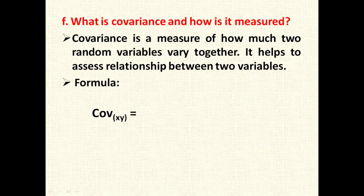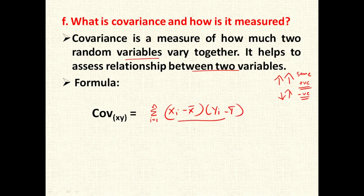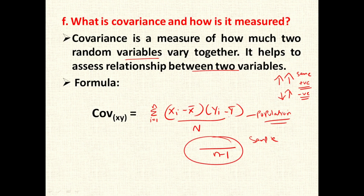What is covariance and how is it measured? Covariance is a measure of how much two random variables vary together; it helps to assess the relationship between two variables. Covariance helps find out in which direction two variables are moving — if they move in the same direction, it is positively correlated; if they move in opposite directions, it is negatively correlated. The formula is: summation of (Xi minus X-bar) multiplied by (Yi minus Y-bar), divided by n for population, or divided by n minus 1 for a sample.